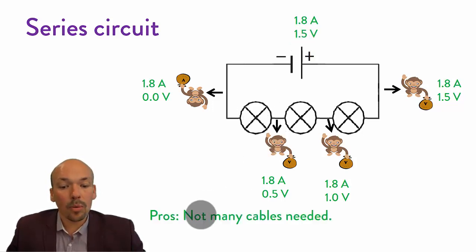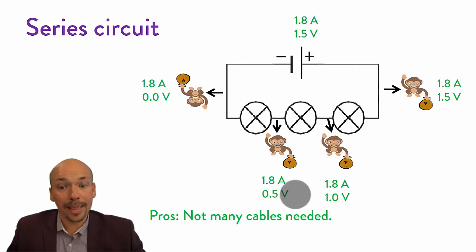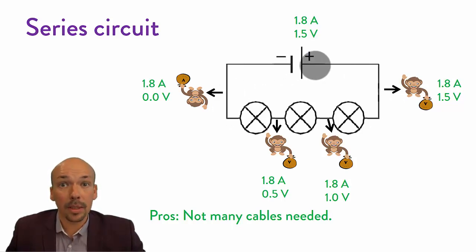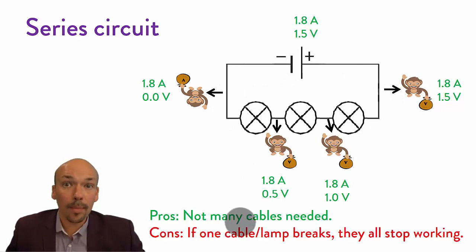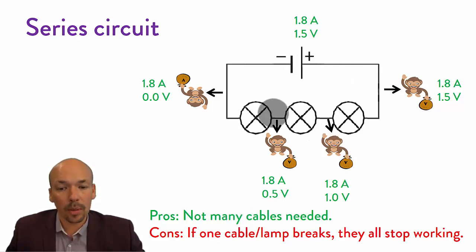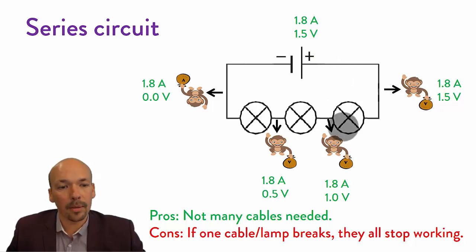There is a pro for the series circuit: you don't need many cables — just a few to make this, which is a positive thing. The negative is that if one cable or lamp breaks, they all stop working. If this one breaks, they all stop working. So that's a negative thing about series circuits.